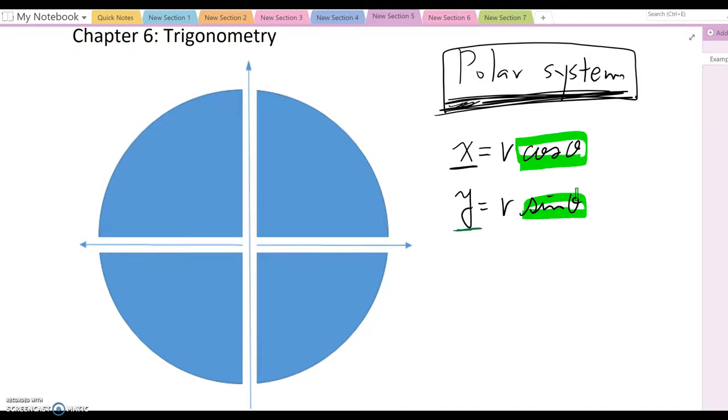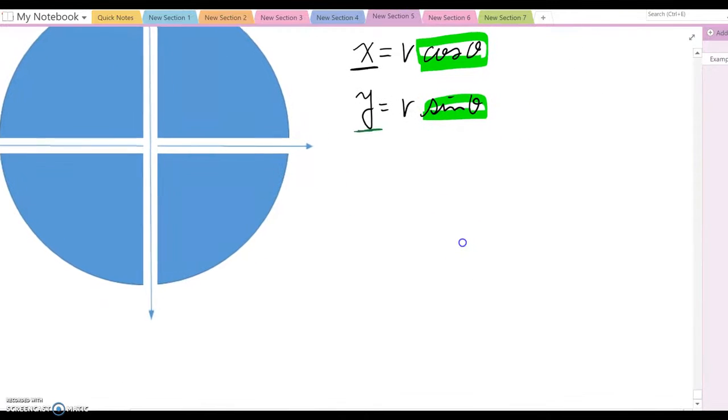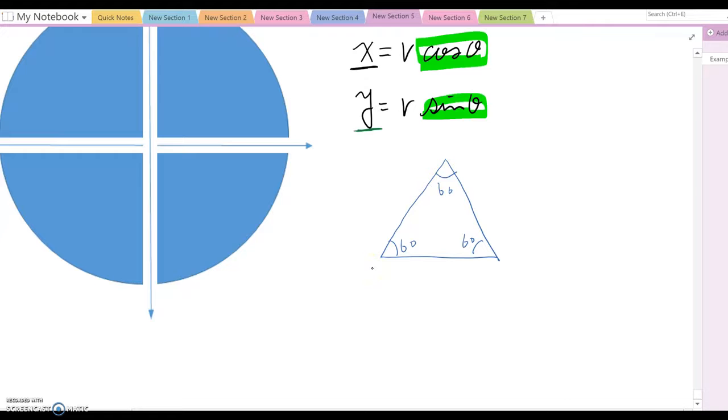Before doing it, we also need to review a little bit of geometry. About the triangle, we have the regular triangle, which means they are all 60 degrees here. Because the equilateral triangle, if I make this side become 1, then everything equals 1 here.